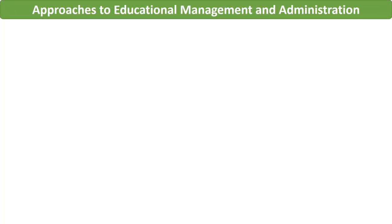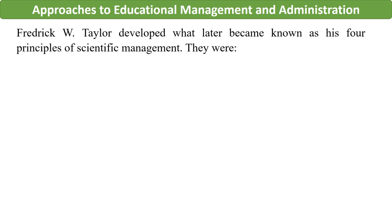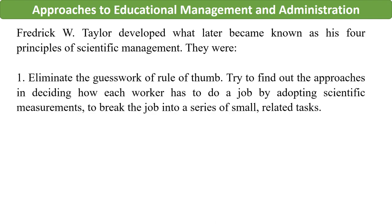Frederick W. Taylor developed what later became known as his four principles of scientific management. The first principle is to eliminate the guesswork of rule of thumb and find out the best approaches by adopting scientific measurements to break the job into a series of small related tasks, deciding how each worker is to do a job.